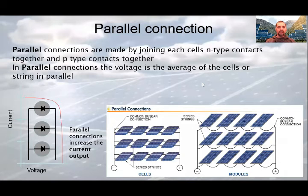On this slide, you can see the parallel connections. Parallel connections are not generally used for individual PV devices, especially cells, but for series strings of cells and modules. Parallel connections involve connecting all the positive terminals of each string together and all the negative terminals together at common terminals or bus bars. In parallel connections, the voltage is the average of the cells or string in parallel. Parallel connections increase the current output. The more cells are linked together, the higher the emitted current.